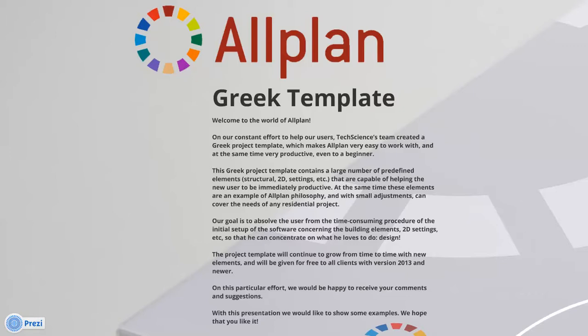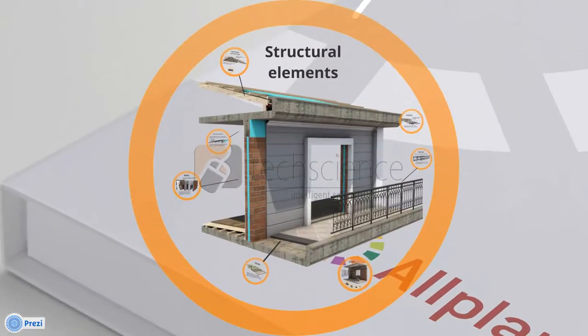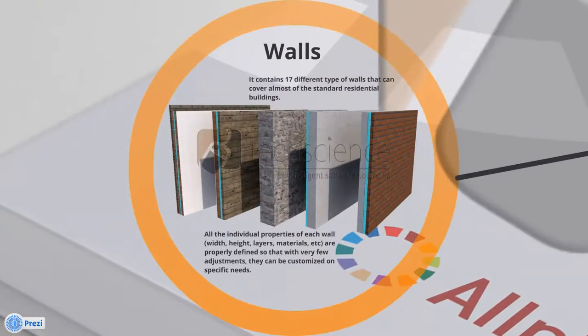Let's begin with the structural elements: walls. The template contains 17 different types of walls that can cover almost all standard residential buildings. All the individual properties of each wall — width, height, layers, materials, etc. — are properly defined so that with very few adjustments they can be customized to specific needs.